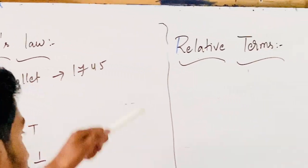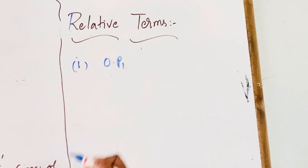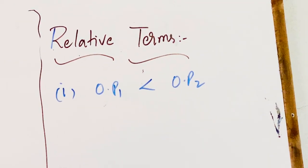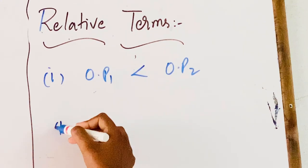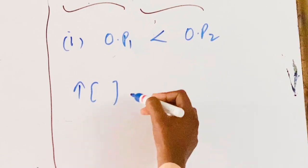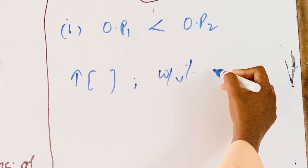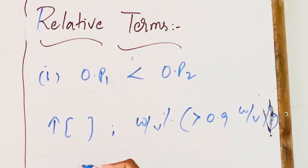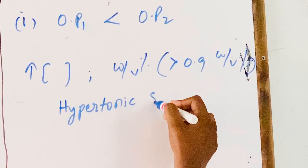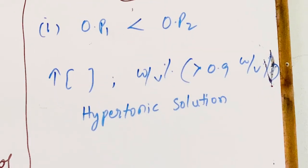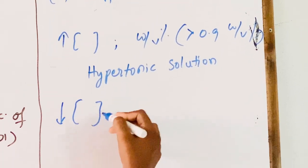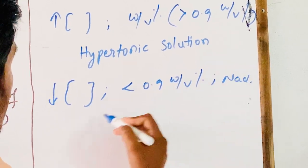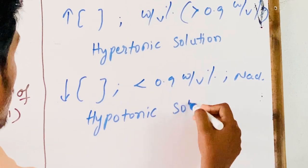Now, the relative terms: osmotic pressure of the first solution may be less than or greater than the osmotic pressure of the second solution. A solution with high concentration — greater than 0.9% weight by volume of NaCl — is known as a hypertonic solution. A solution with less concentration — less than 0.9% weight by volume of NaCl — is known as a hypotonic solution.